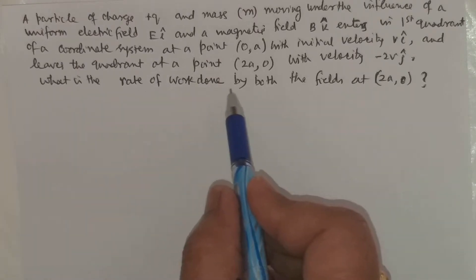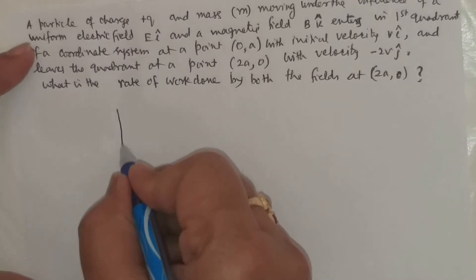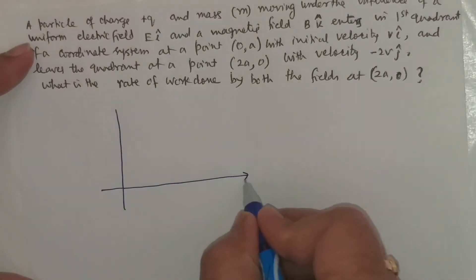What is the rate of work done by both the fields at (2A,0)? If we draw a rough figure, this is the x-axis.